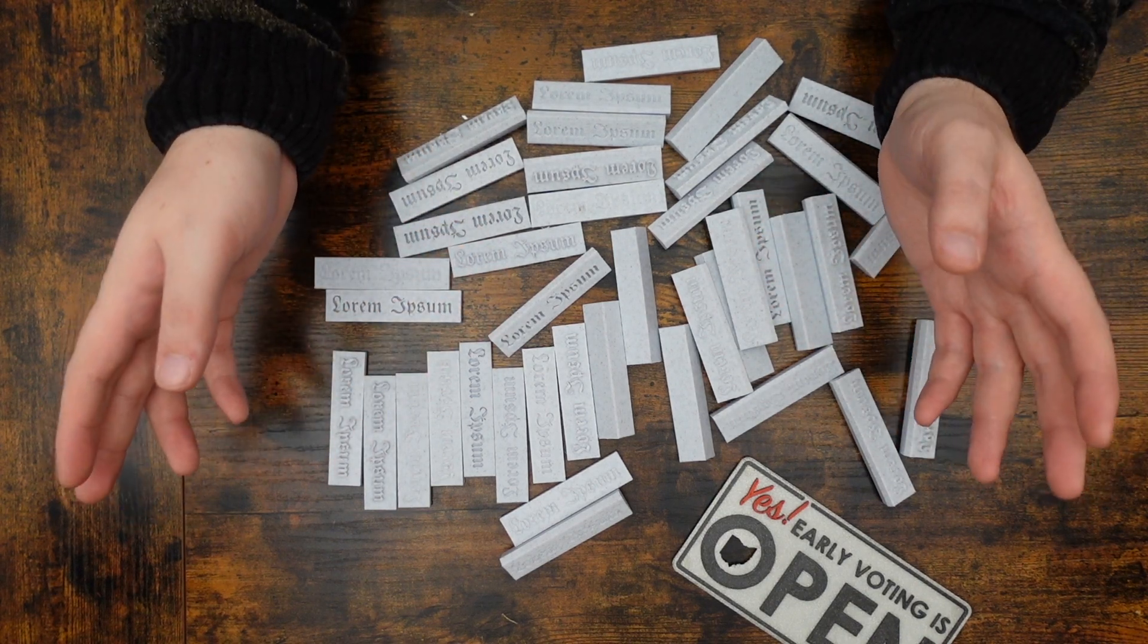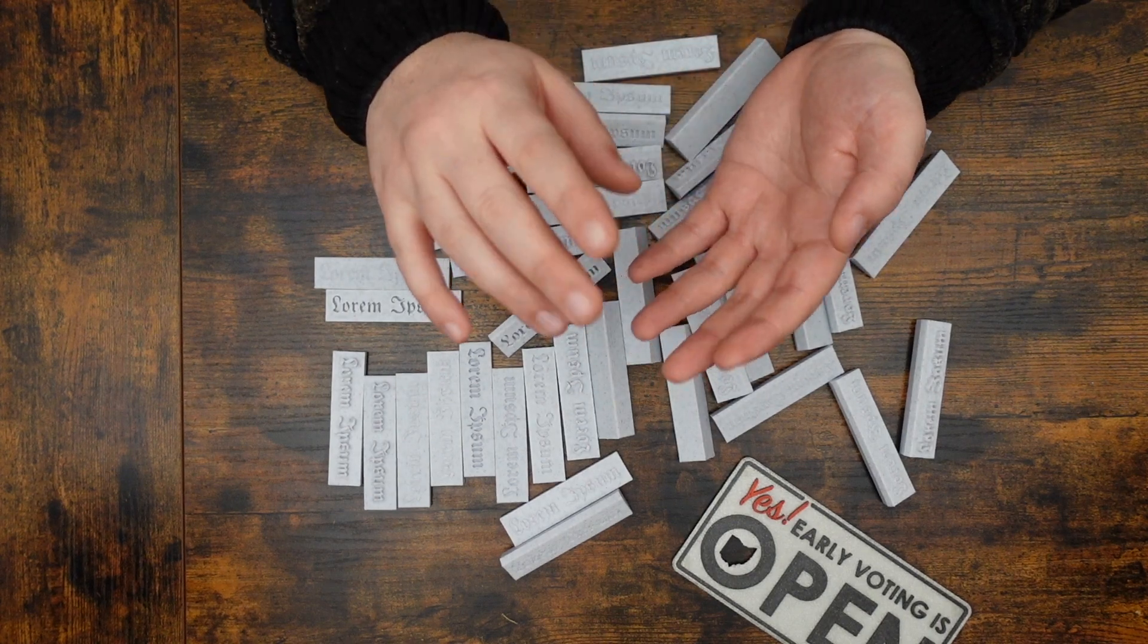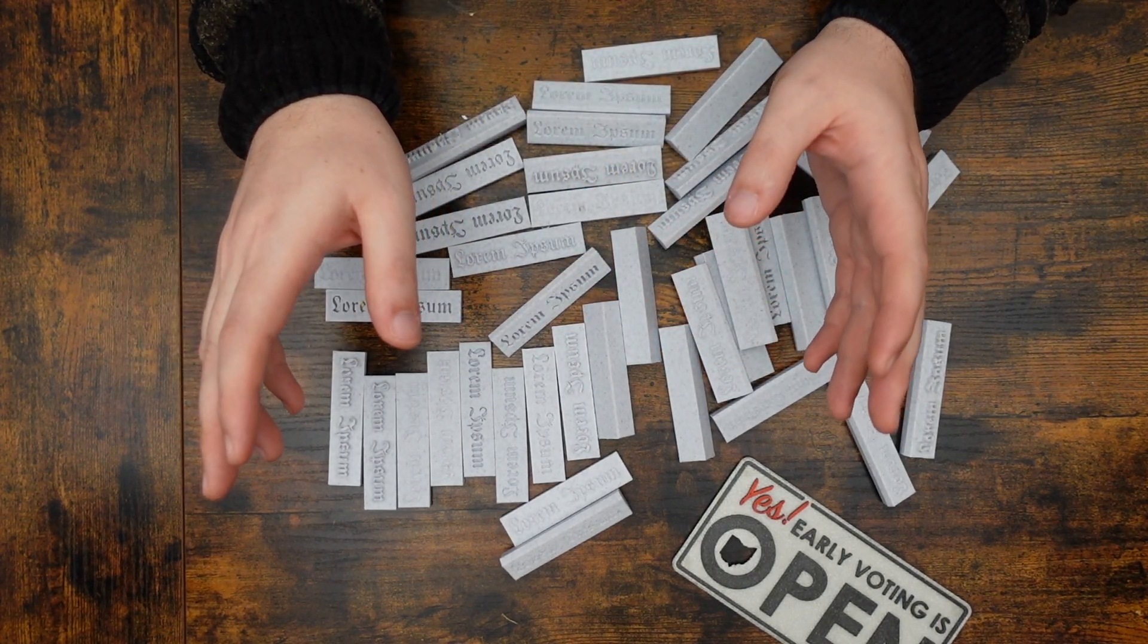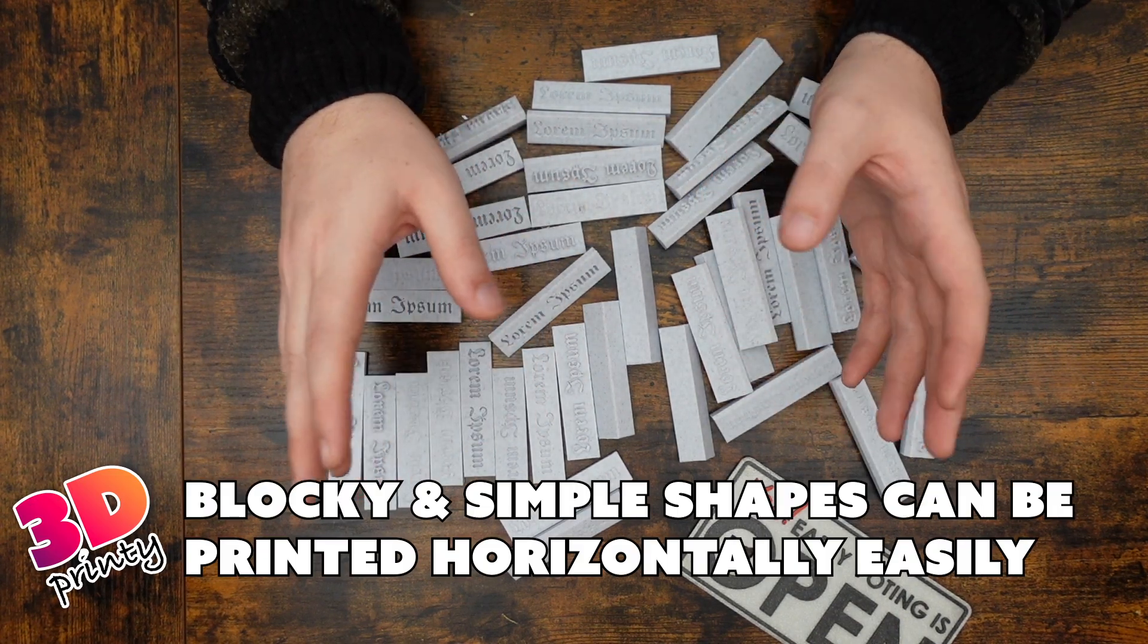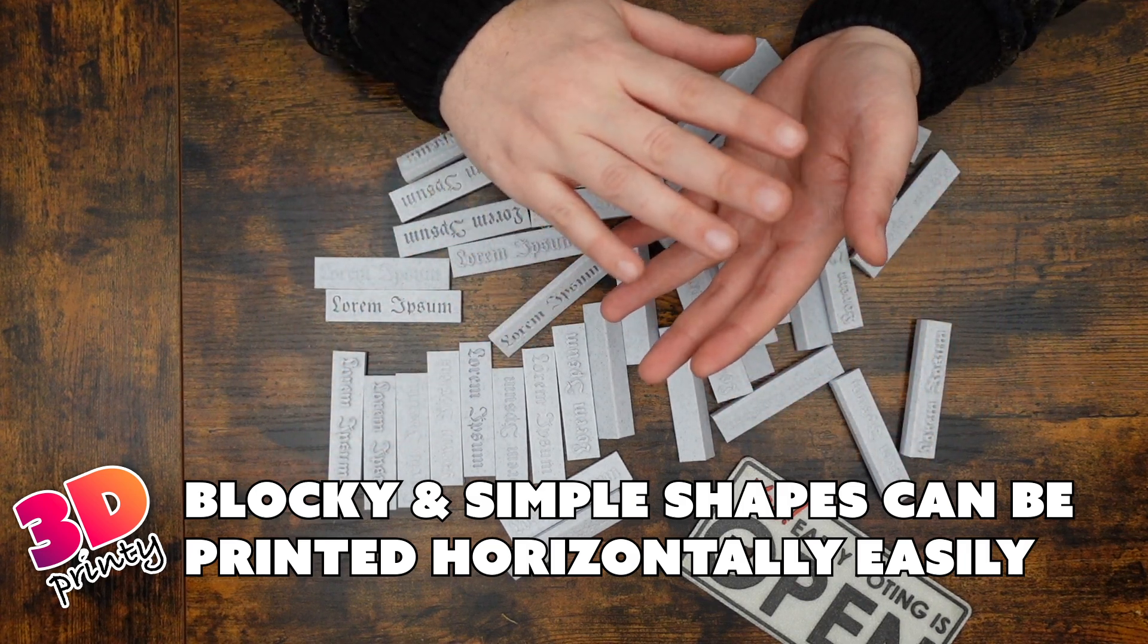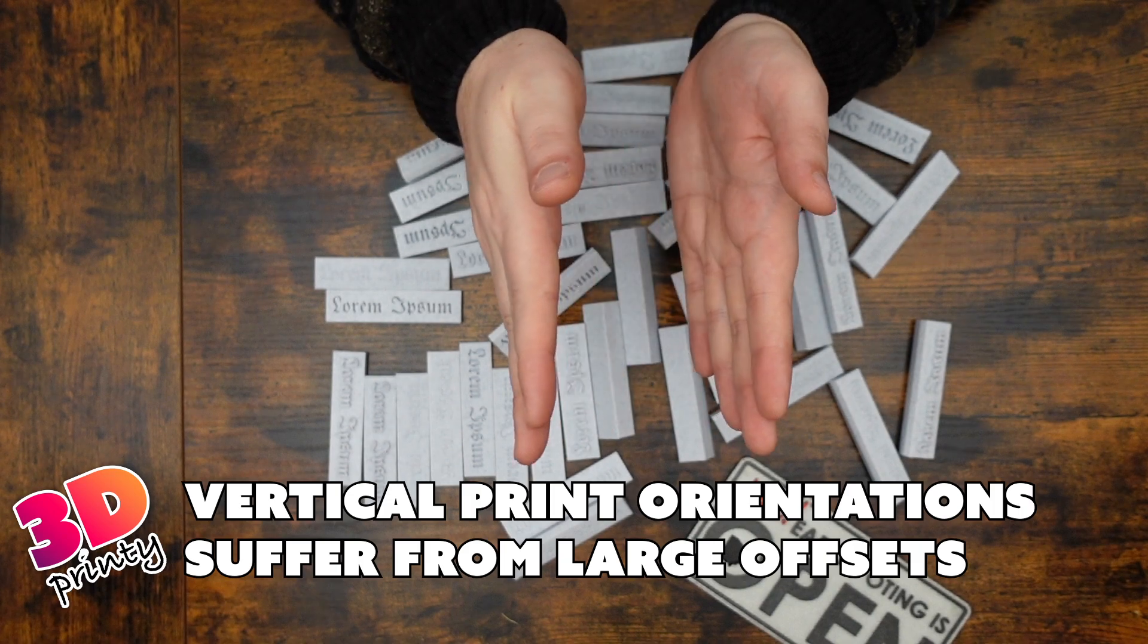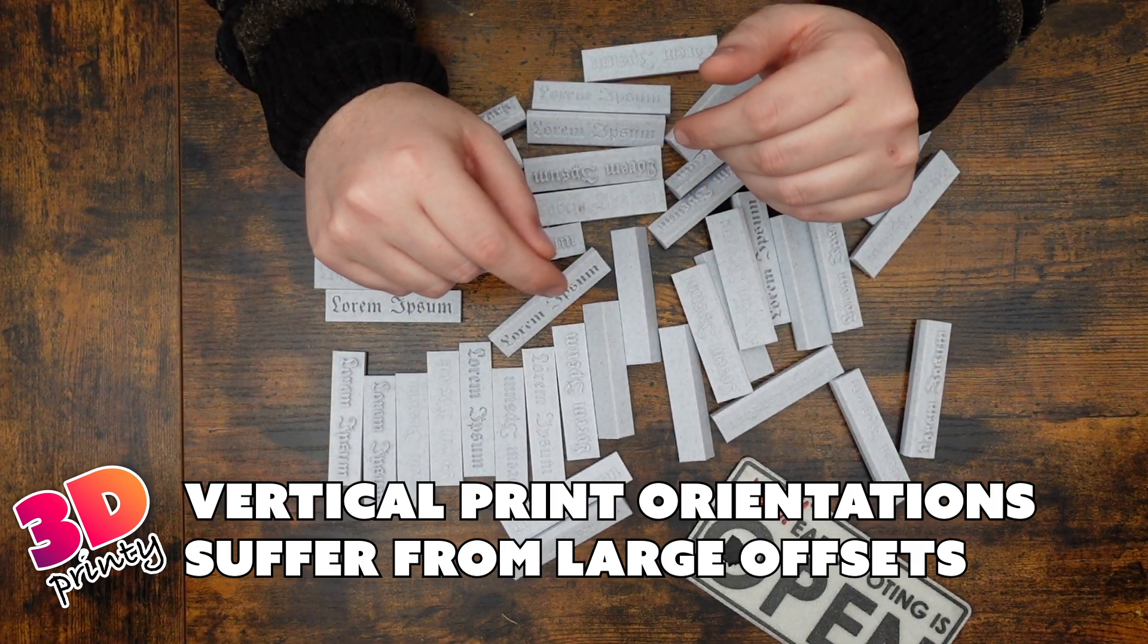So we have an excellent guideline for printing typography. Generally speaking, printing vertically gives you nice, crisp letters. But there are also exceptions. If the letters you're printing are fairly simple in shape or blocky, you may want to print those horizontally. Or if the letters are separated from the base of your print significantly. That might be another case where you might want to print horizontally.